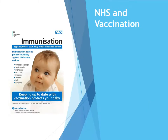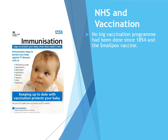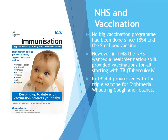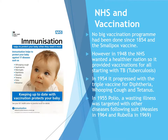The NHS also had a big focus on vaccination, as there hadn't really been a vaccination programme since the smallpox vaccine in the 1850s. In 1948 the NHS believed a healthier nation would reduce costs, so there was a focus on tuberculosis first, then in 1954 triple vaccines for diphtheria, whooping cough and tetanus, then polio a year later, followed by measles and rubella.